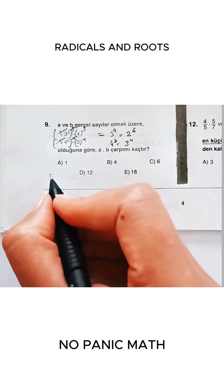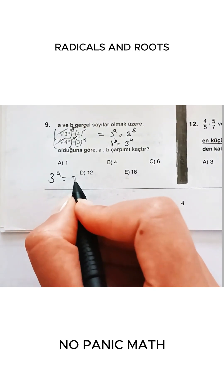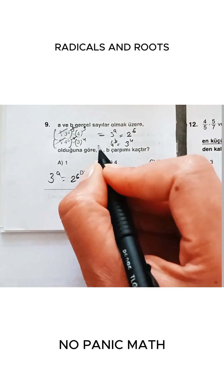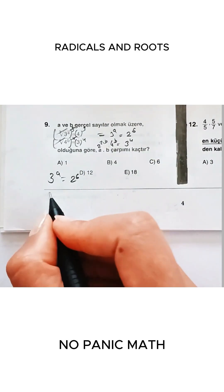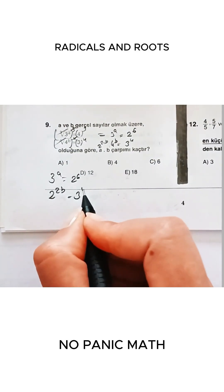Okay, now let's tidy this part up again. Three to the power of a equals two to the power of six. Guys, let's also write this part as two to the second power. Two to the power of two b equals three to the power of four.